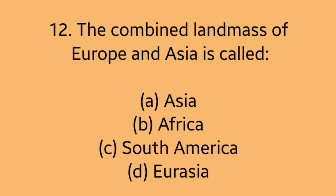Question 12: The combined landmass of Europe and Asia is called? Option A: Asia. Option B: Africa. Option C: South America. Option D: Eurasia. Answer is Option D, Eurasia.